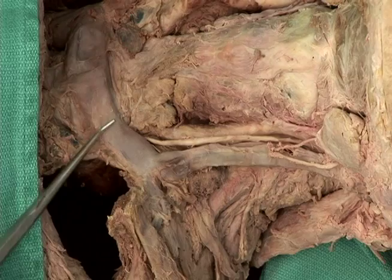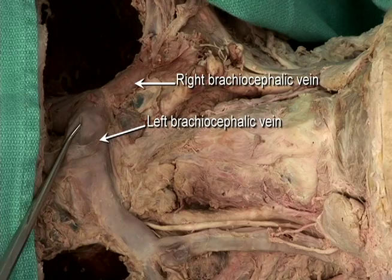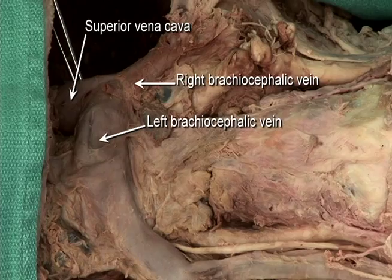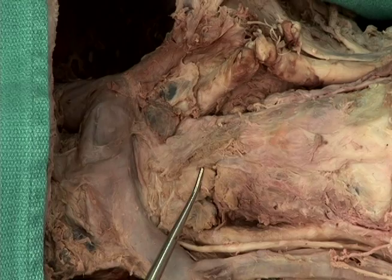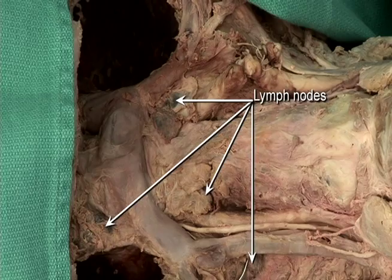Clean and identify the left brachiocephalic vein and the right brachiocephalic vein, which drain to the superior vena cava. Note the extensive collection of lymph nodes around these vessels.